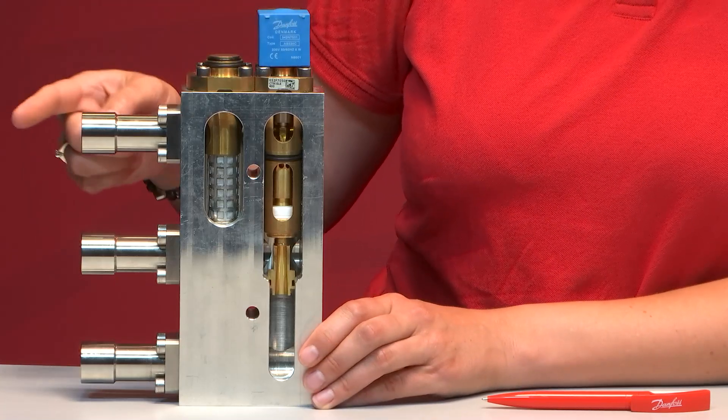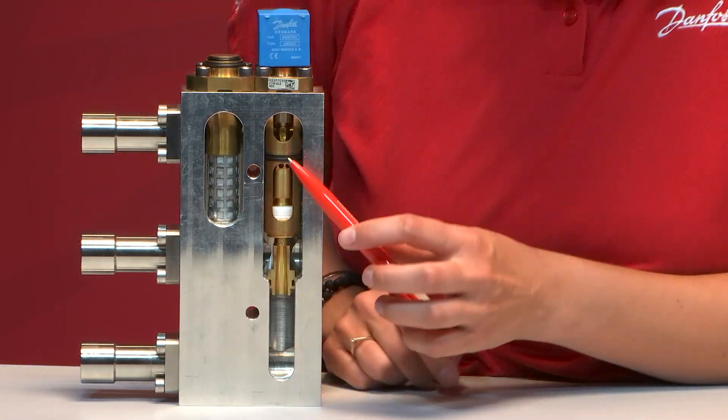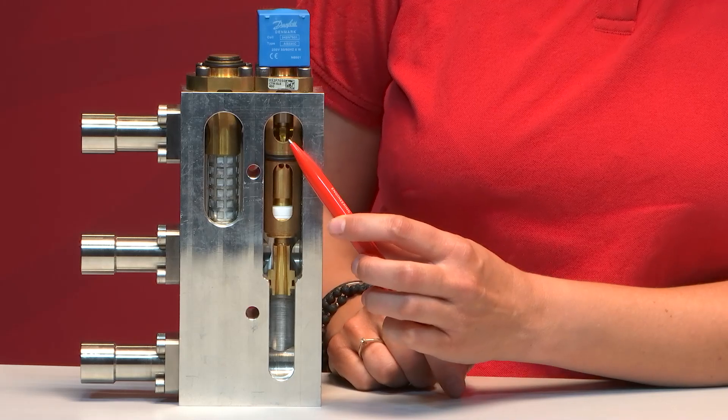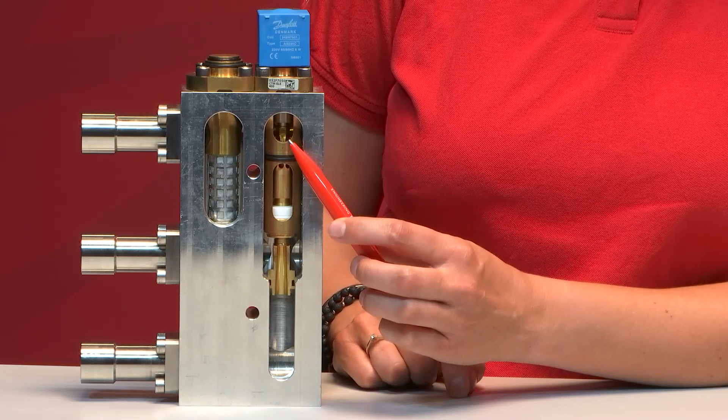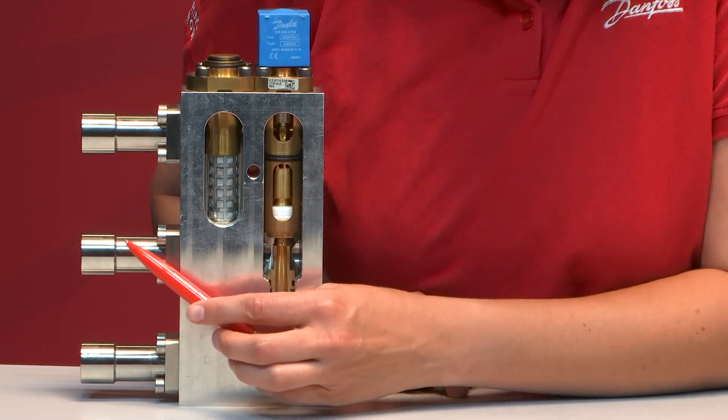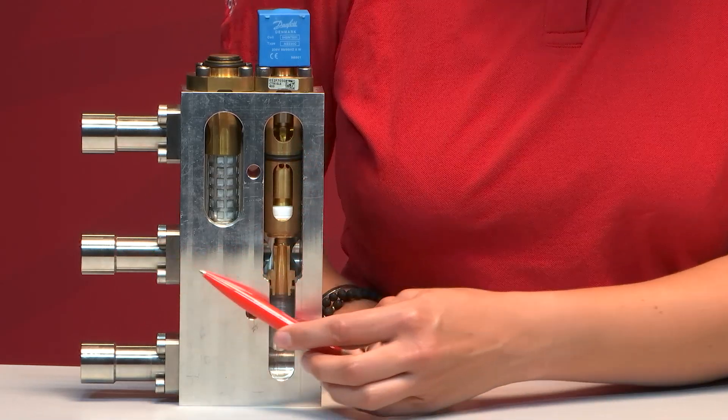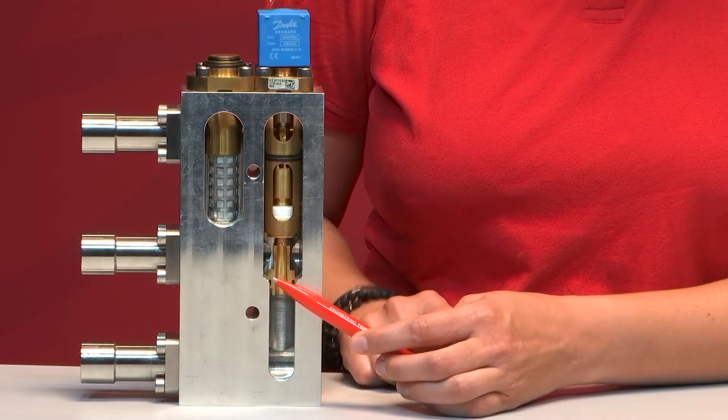What will happen is the high-pressure CO2 will enter into the ejector nozzle, as you can see up here in the top, creating lower pressure conditions than in the MT suction line. This will initiate flow from the suction port from the MT evaporators into the ejector.